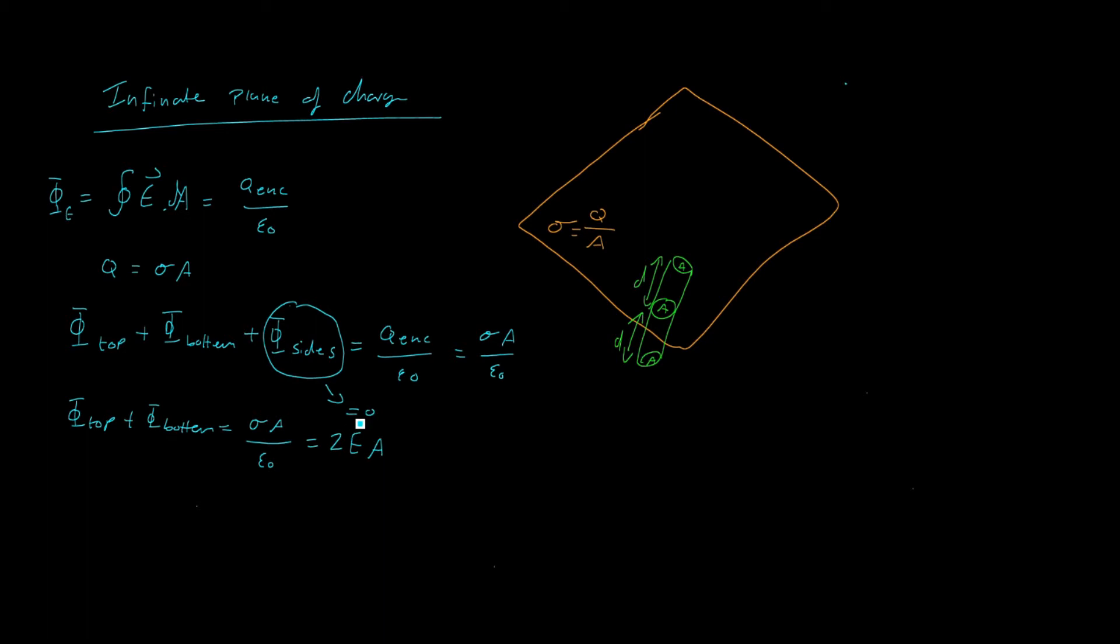It's not a vector anymore, because we've gone through the dot product. Rearranging that, we find that the electric field is equal to sigma over two epsilon 0, because the area cancels.